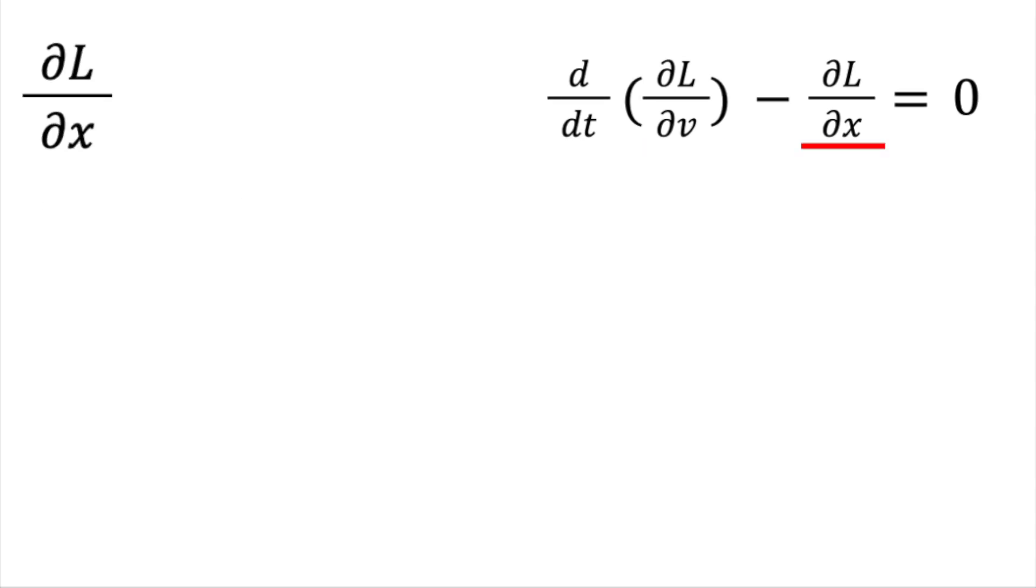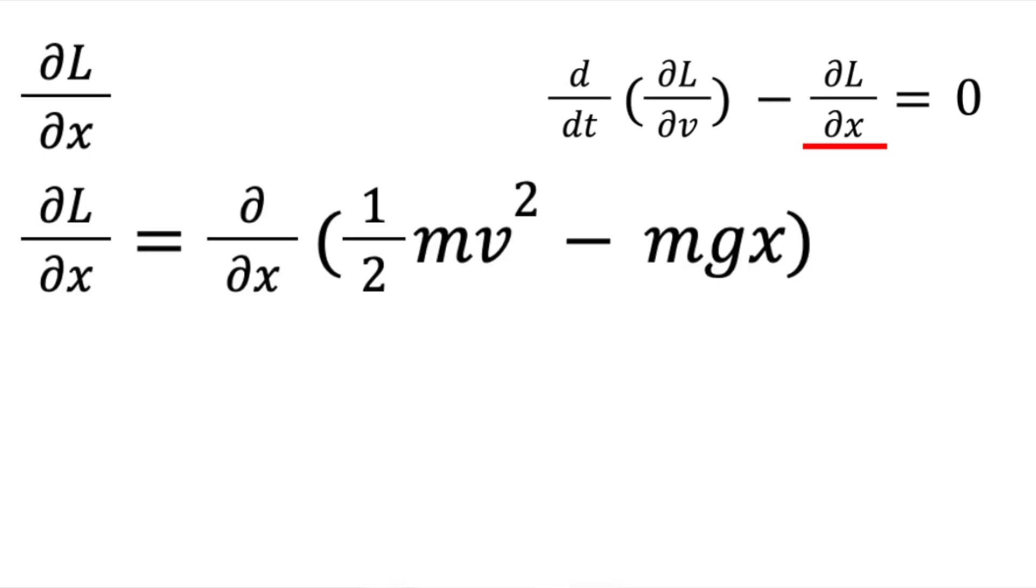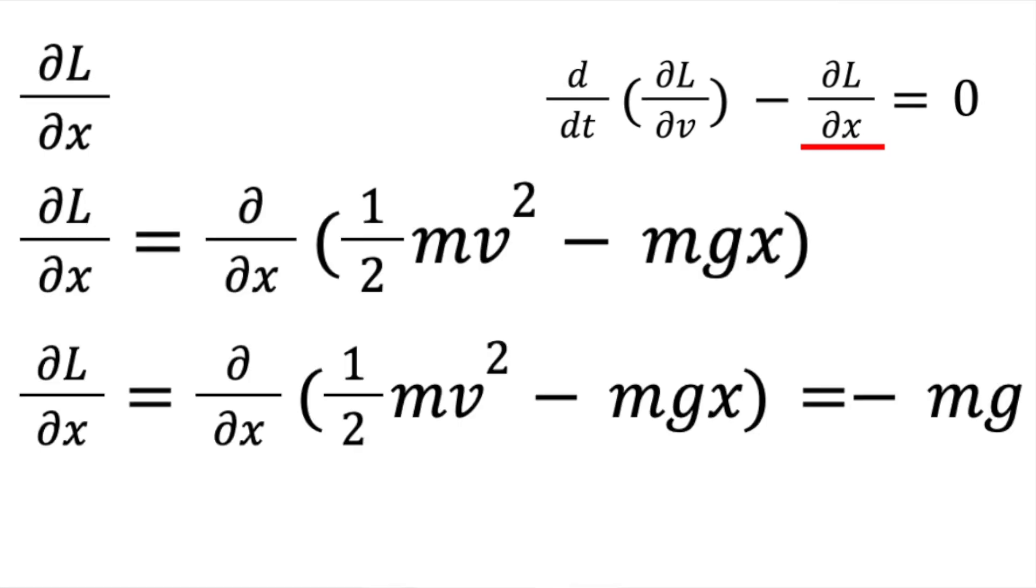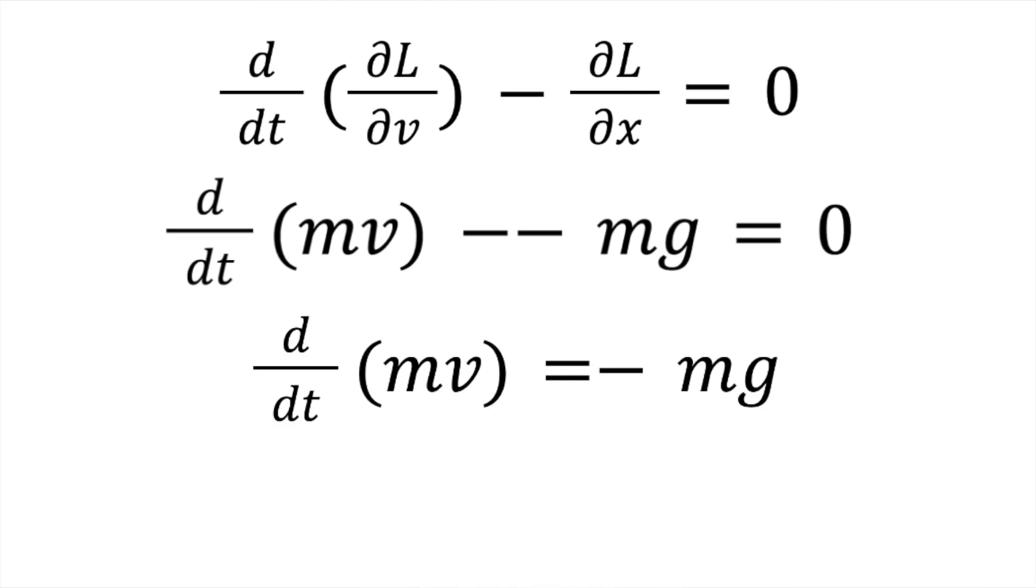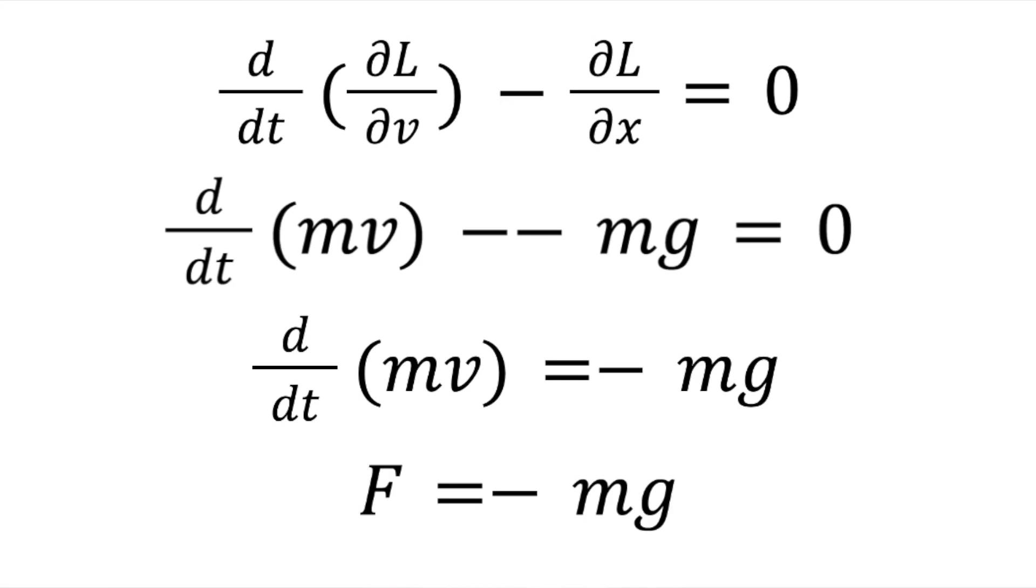Now take the partial derivative of L with respect to x. This gives us negative mg. So simplifying this equation, we get the derivative of momentum minus negative mg is equal to zero. Since the derivative of momentum is force, we can rearrange this equation to get F equals negative mg, which is Newton's second law of motion when applied to an object in freefall.